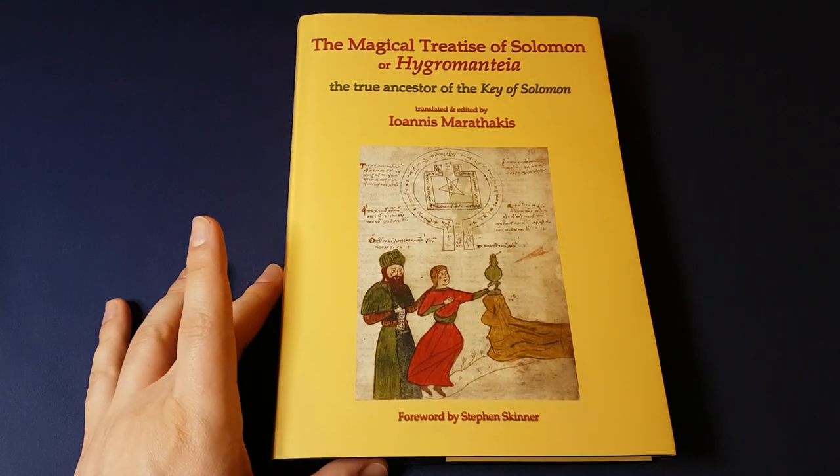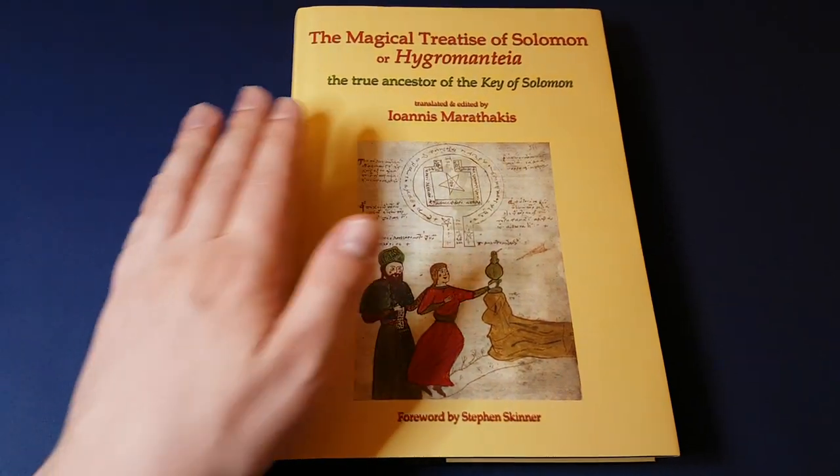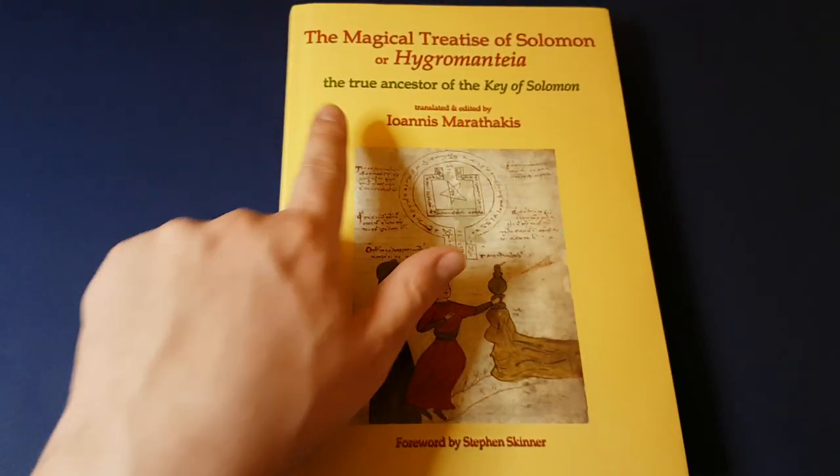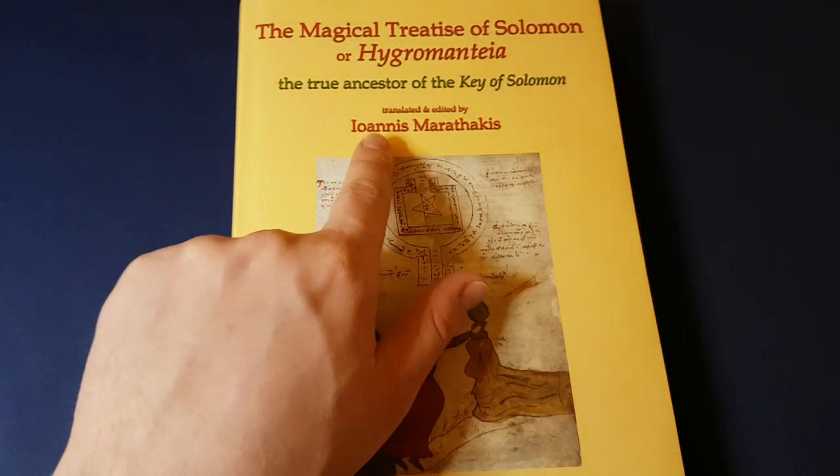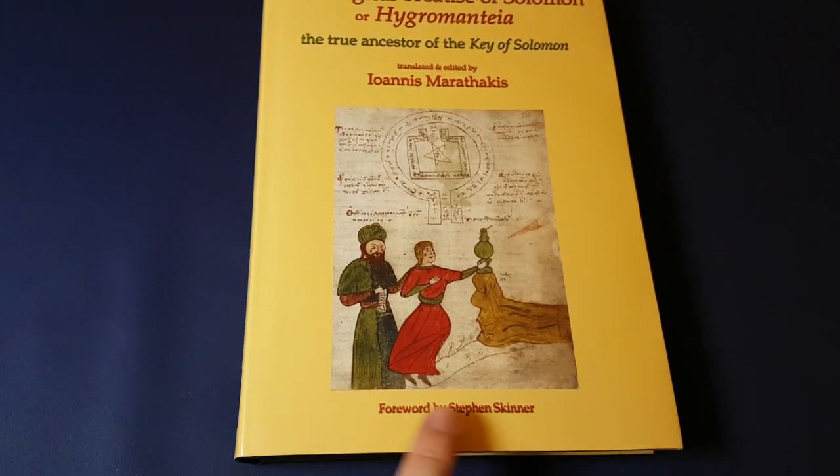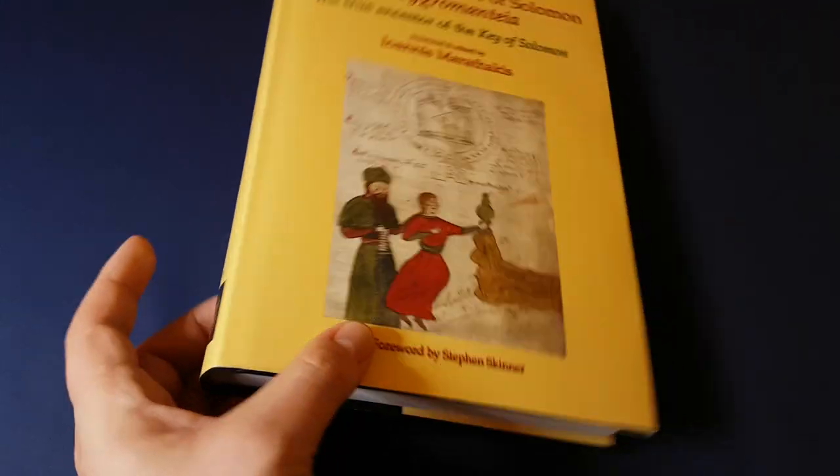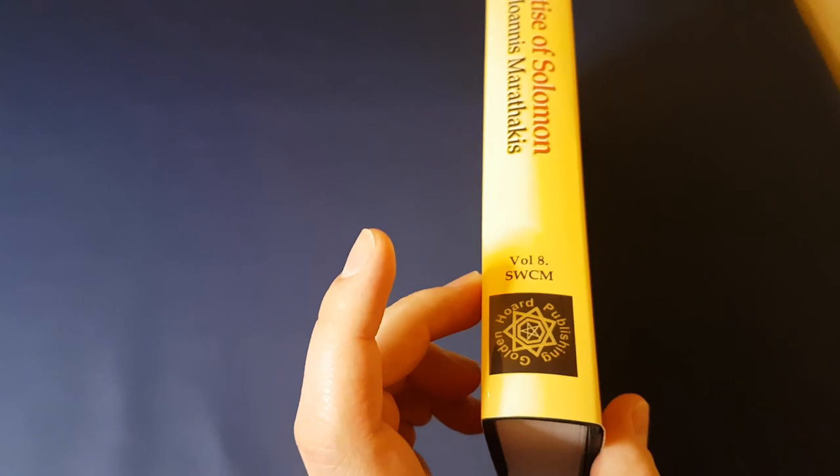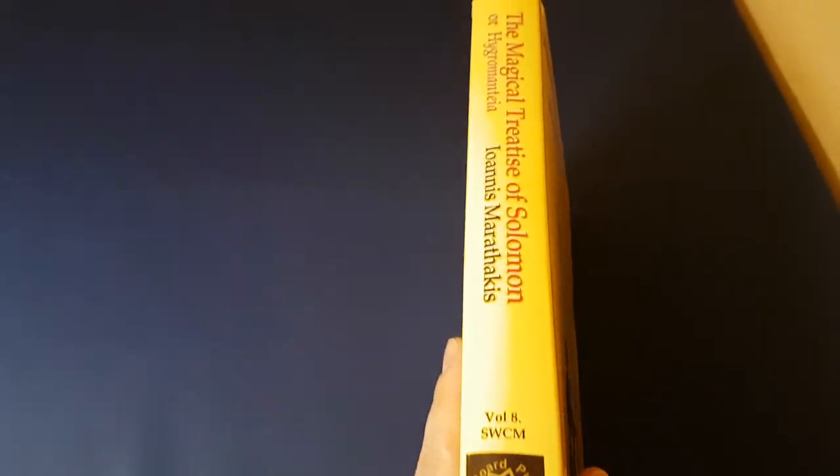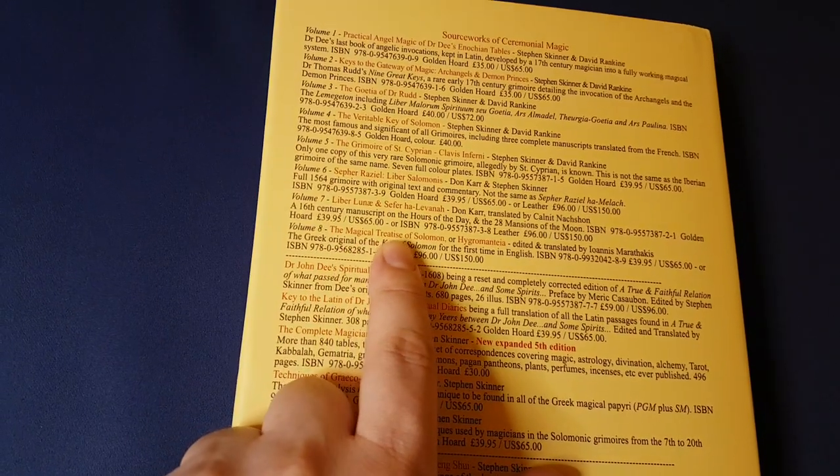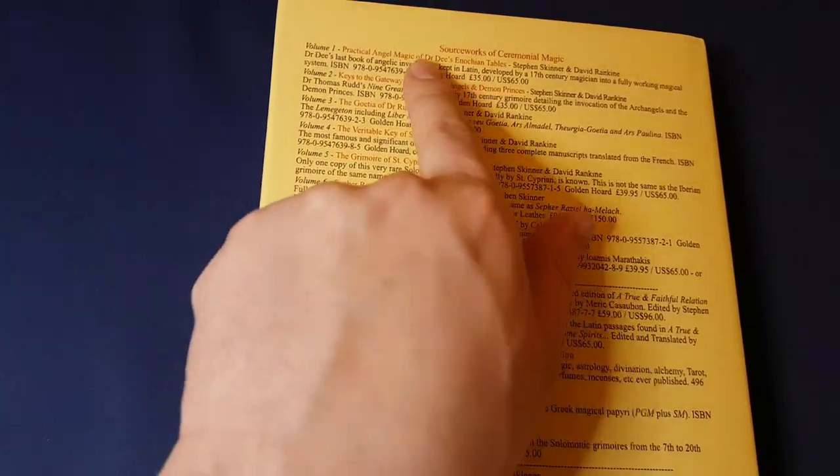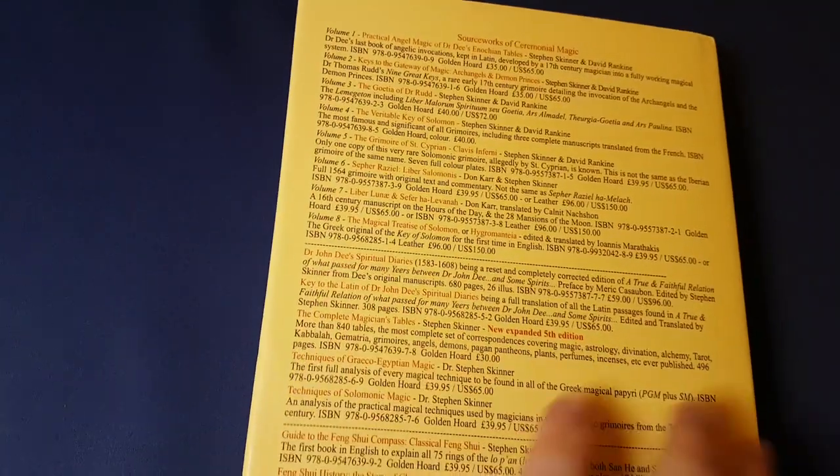I have a copy here of the Hygromantia or the Magical Treatise of Solomon. It's the true ancestor of the Key of Solomon translated and edited by Ioannis Marathakis. There is a foreword by Dr. Skinner and this is a Golden Horde publishing. It's the eighth volume in the source works of ceremonial magic and it's a very interesting volume.